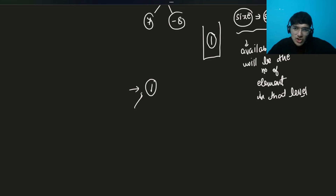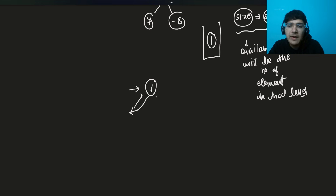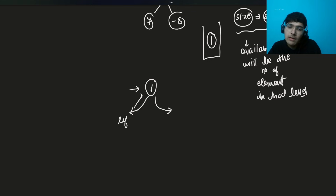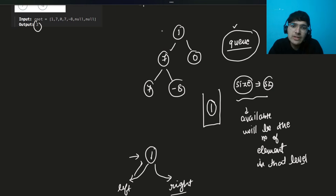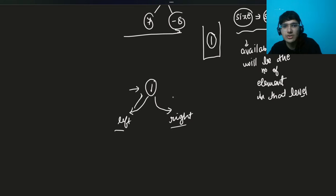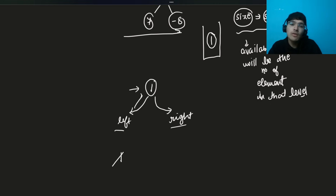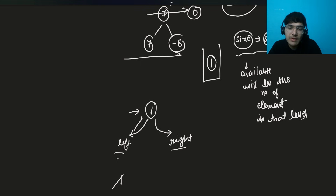You push the left child and right child — but only if they're not null. We're traversing left to right. So initially we had node 1, we popped it out, and then pushed its children: 7 and 0. That's how we move from level one to level two.